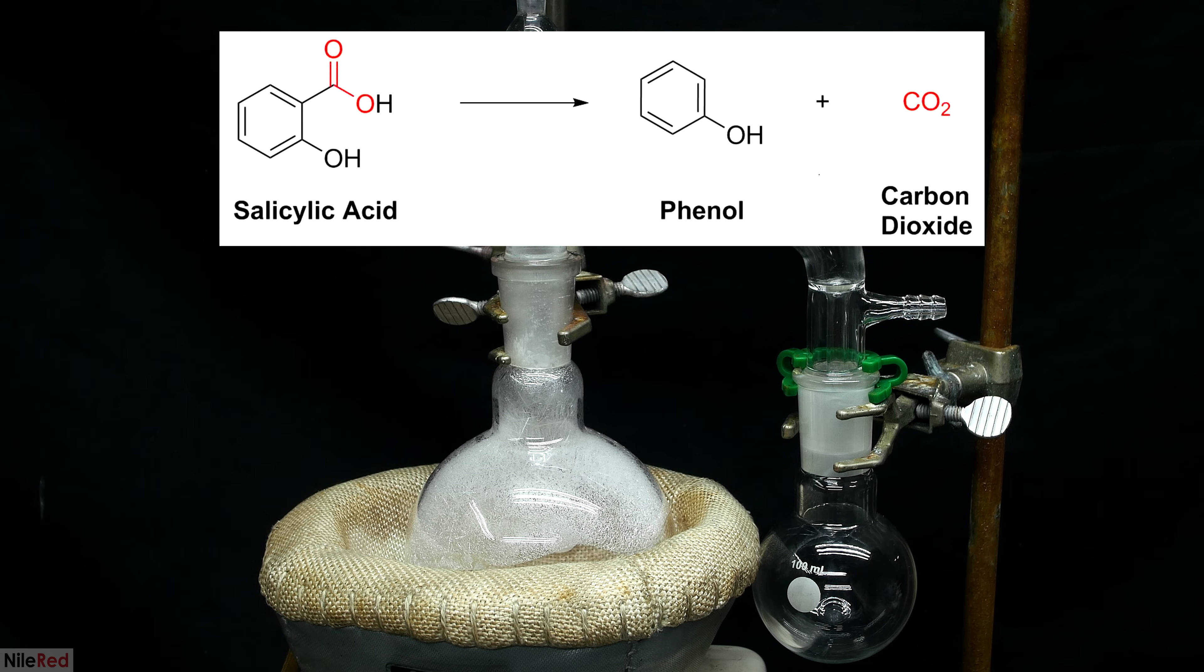Okay, so as I said before, the reaction that we're carrying out is known as a decarboxylation. When the salicylic acid is heated up enough, it will decompose into phenol and CO2 gas. The CO2 will simply just diffuse away out of the flask, and our phenol will be distilled over.